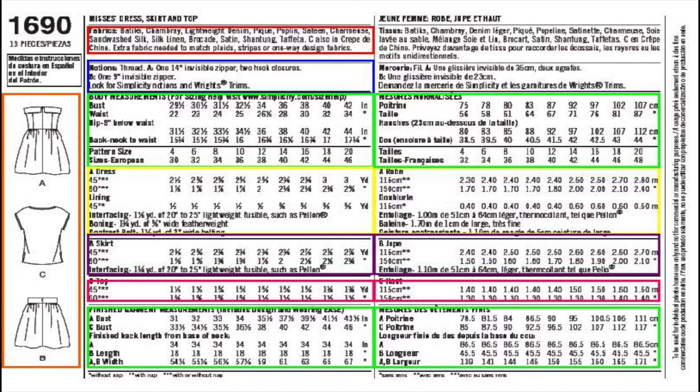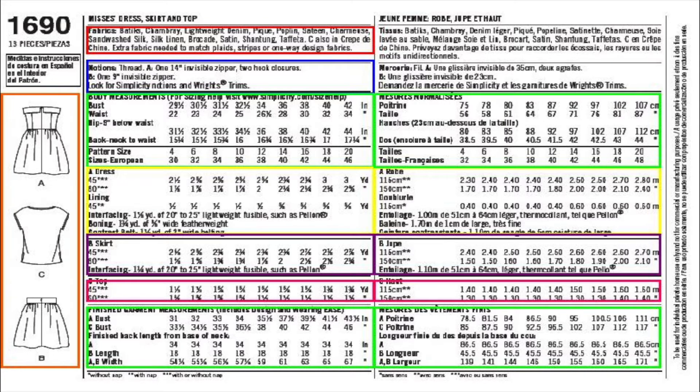The first thing on the back is the pattern number, housed in the upper left-hand corner — it's usually always in this section on the back of a commercial pattern. Directly under that is the total number of pieces included in your pattern.